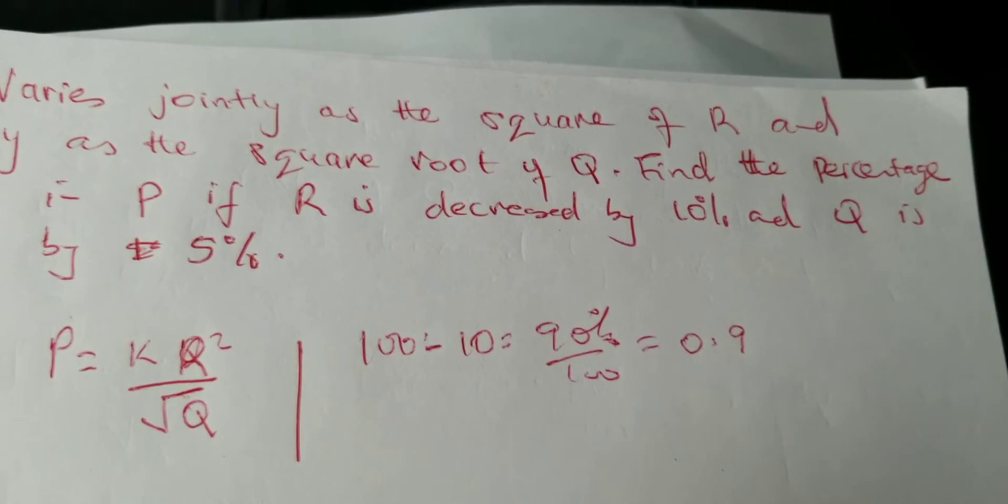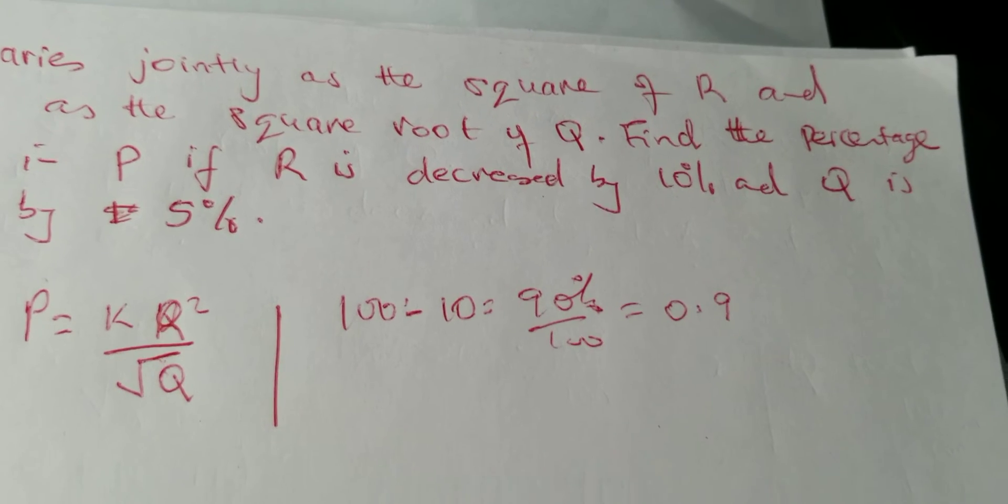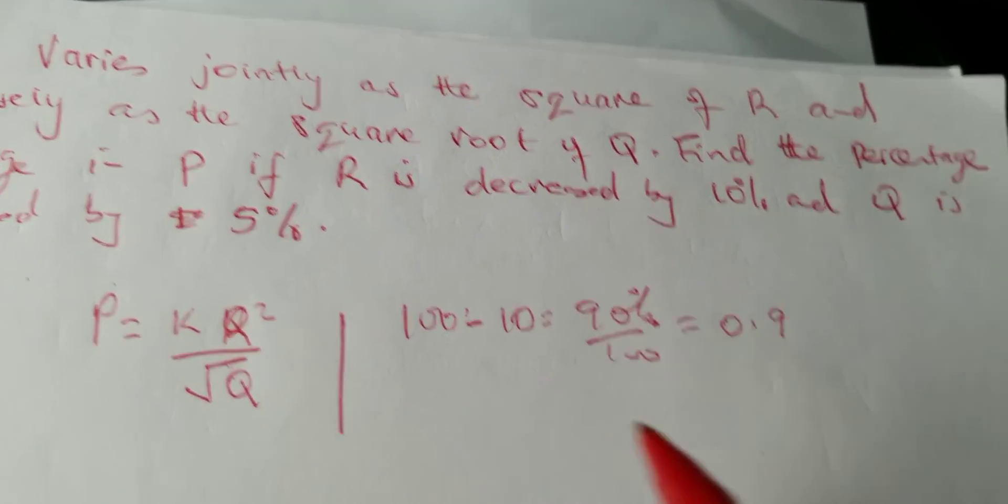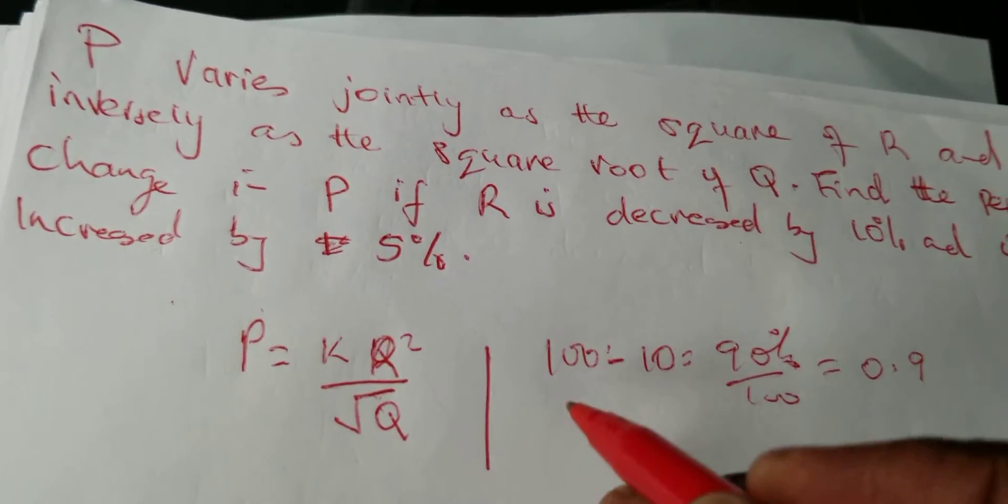Then Q is increased by 5 percent. This was R, so Q was 100 percent.